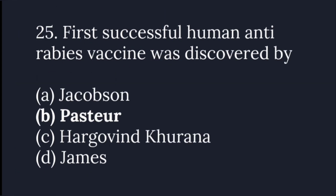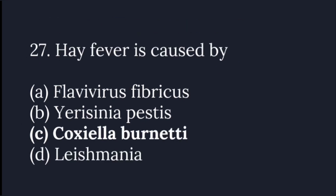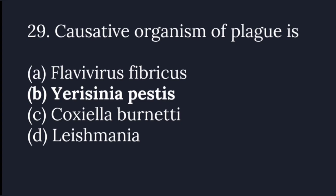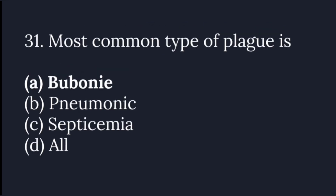The first successful human anti-rabies vaccine was discovered by Pasteur. Yellow fever is caused by Flavivirus. Hay fever is caused by Coxiella burnetii. The causative organism of Kala azar is Leishmania. The causative organism of plague is Yersinia pestis. Natural reservoirs of plague include field mice, gerbils, and skunks. The most common type of plague is bubonic.